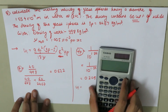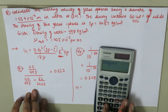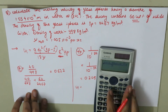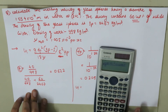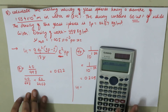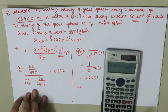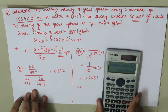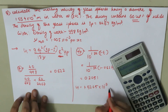Substituting all values: u_t = 9.81 × (1.554 × 10⁻⁴)² × (2467 minus 998) × (0.622)² × 0.2051 / (18 × 1.005 × 10⁻³). The hindered settling velocity is 1.5265 × 10⁻³ meters per second.